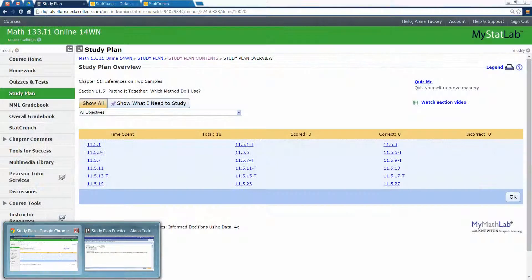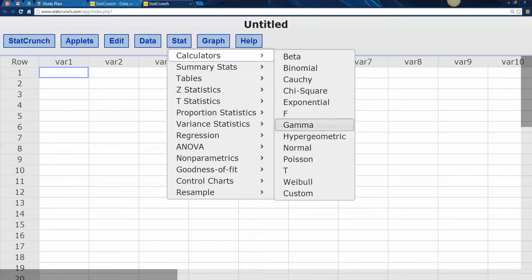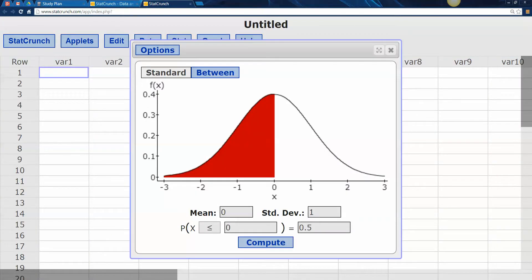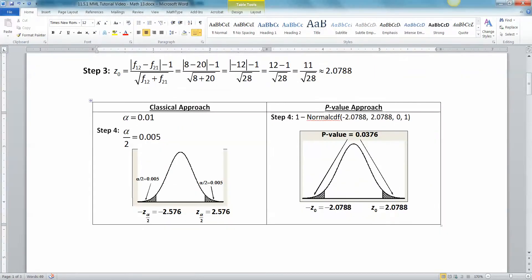And in case anybody's really interested, you can also do it with StatCrunch, let me show you. So you go to stat calculators, pick the normal calculator, and you want this area to be .005, enter, and there's 2.576. Okay, so there's the critical values for that method.